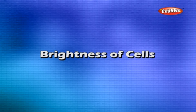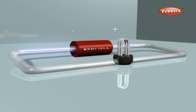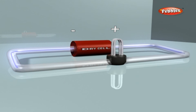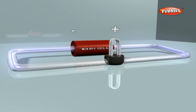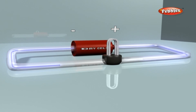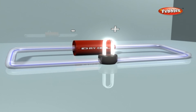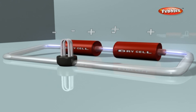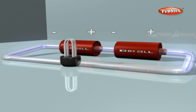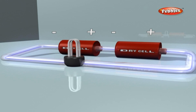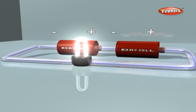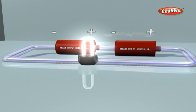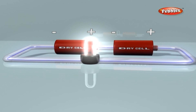Brightness of cells experiment: Take a dry cell and a torch bulb. Connect the bulb to the cell as shown in figure A and notice the brightness. Now connect two cells as shown in figure B — the bulb glows more brightly. You may try using more cells in a similar manner to further increase the glow.